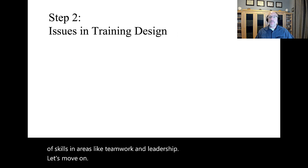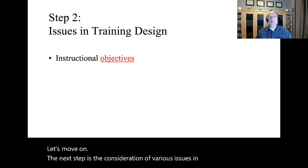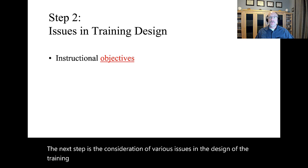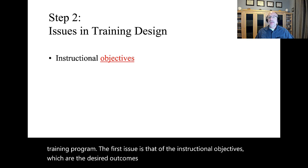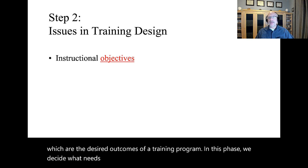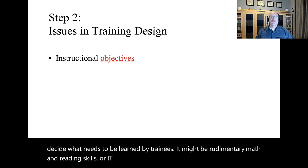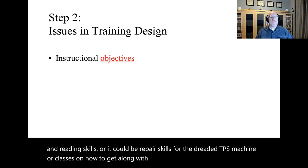The next step is the consideration of various issues in the design of the training program. The first issue is that of the instructional objectives, which are the desired outcomes of a training program. In this phase, we decide what needs to be learned by trainees. It might be rudimentary math and reading skills, or it could be repair skills for the TPS machine, or classes on how to get along with people who are very different from ourselves.